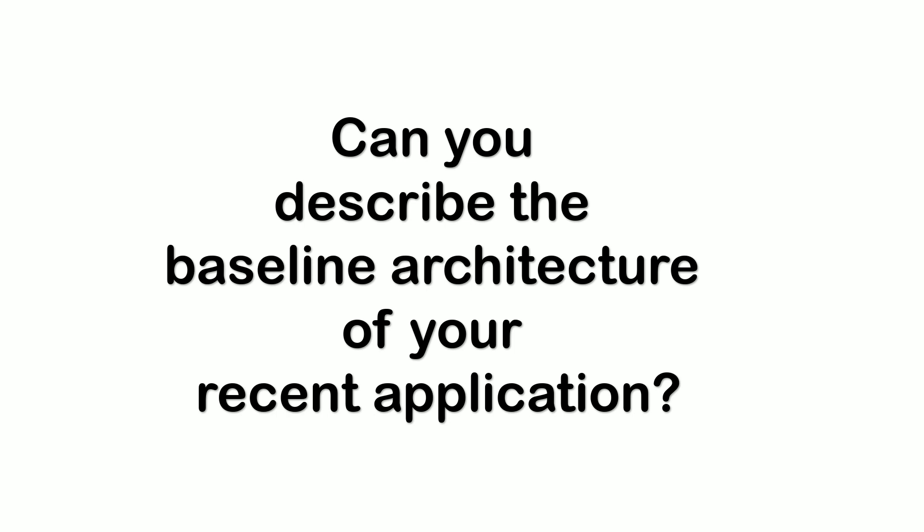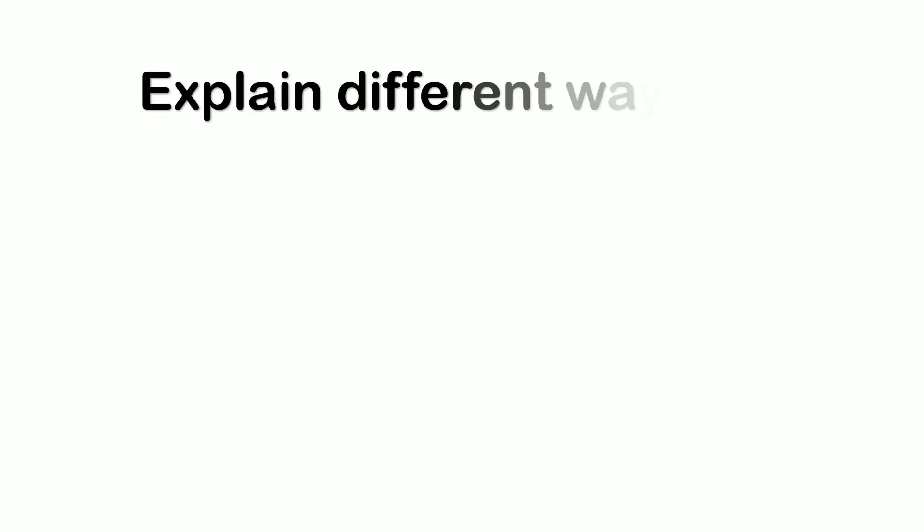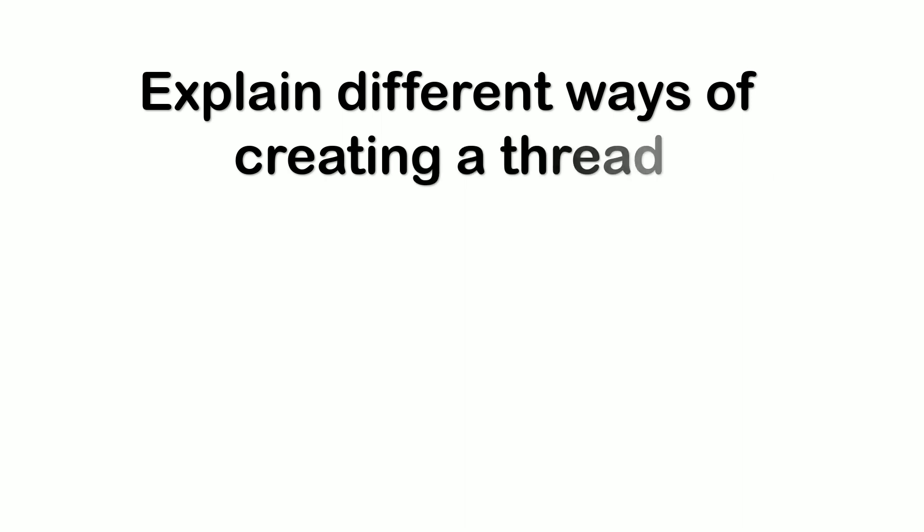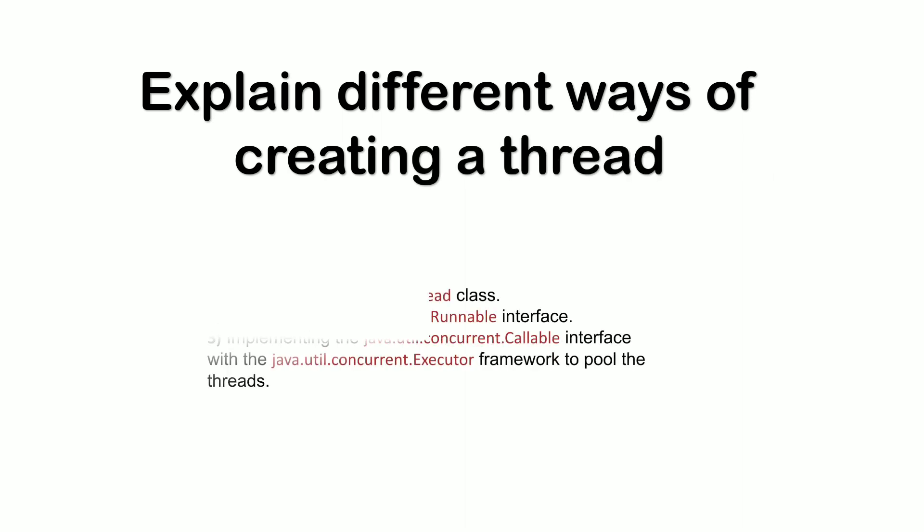The next question was: explain different ways to create a thread in Java. This can be done in three ways — by extending the Thread class, by implementing the Runnable interface, or by implementing the Callable interface with the concurrent executor framework to pool the threads. These are the three ways I know. If there are any other ways, please mention them in the comment section.